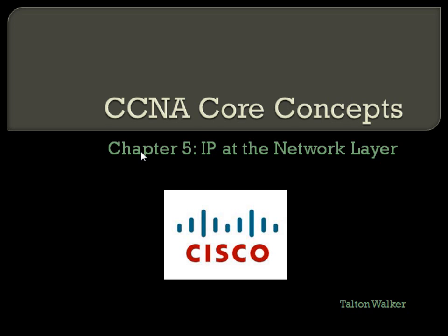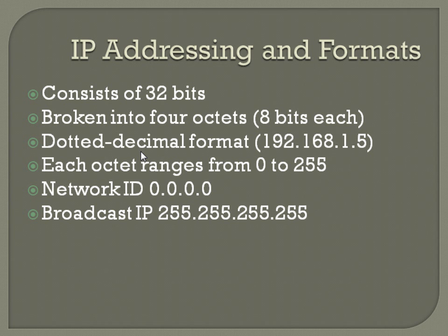So slash 24, slash 25, slash 26, all the way to 32 — you're going to have to memorize those. All right, so we'll start off at the beginning: IP addressing and formats. IP addresses, at least IP version 4 — we won't really get into IP version 6; I think it touches on it briefly at the end. IP version 4 addresses, which you guys are going to be really familiar with, consist of 32 bits broken into four octets.